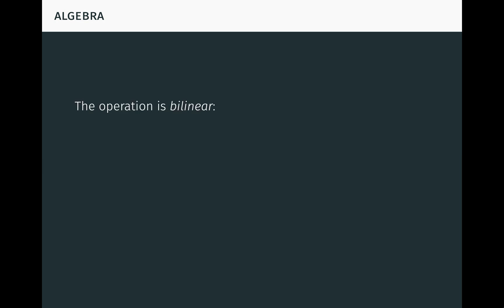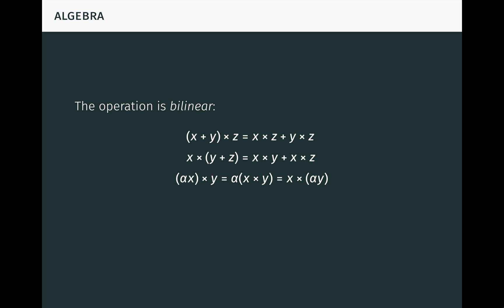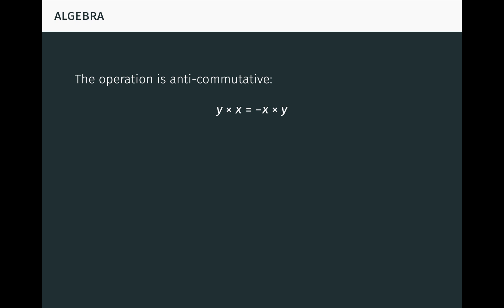We now examine the algebraic properties of the cross product operation. First, the operation is bilinear. That is, x plus y cross z equals x cross z plus y cross z; x cross y plus z equals x cross y plus x cross z; and alpha x cross y equals alpha times x cross y, which equals x cross alpha y. These equations follow from multilinearity of the determinant function delta and definiteness of the inner product. The first two show that the cross product distributes over addition, while the third shows that it's compatible with scalar multiplication. For this reason, R3 is said to form an algebra under the cross product. The operation is also anti-commutative. That is, y cross x equals minus x cross y. This equation follows from the alternating property of the determinant function delta. It tells us that if we interchange the order of the vectors x and y, the cross product points in the opposite direction.